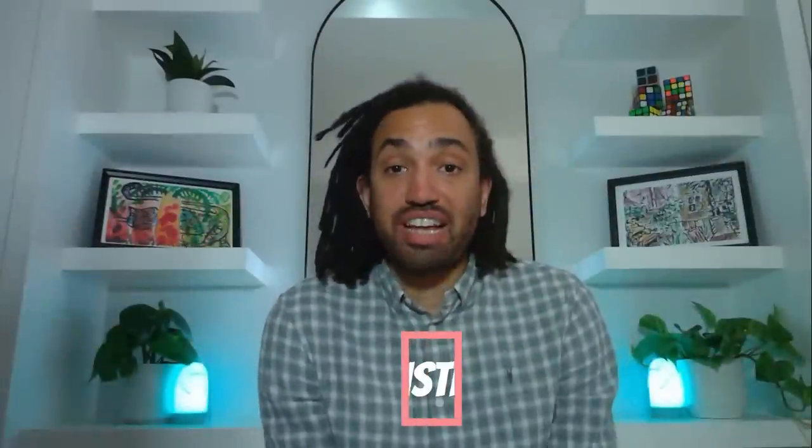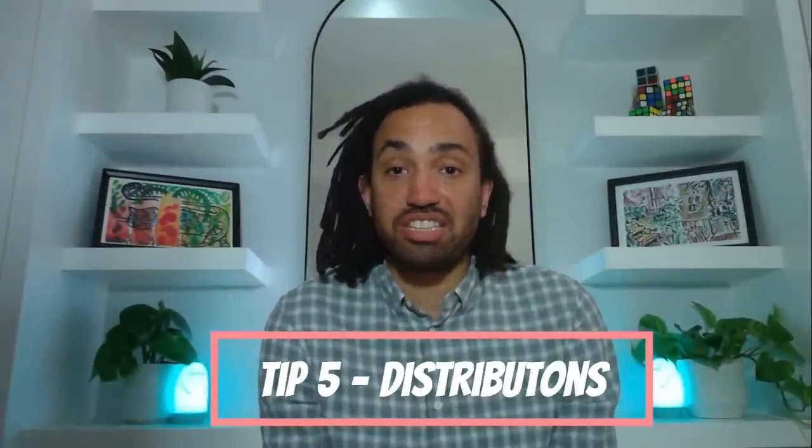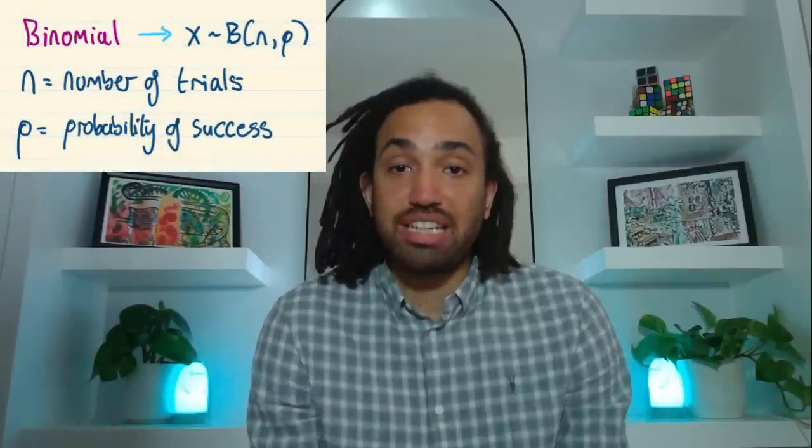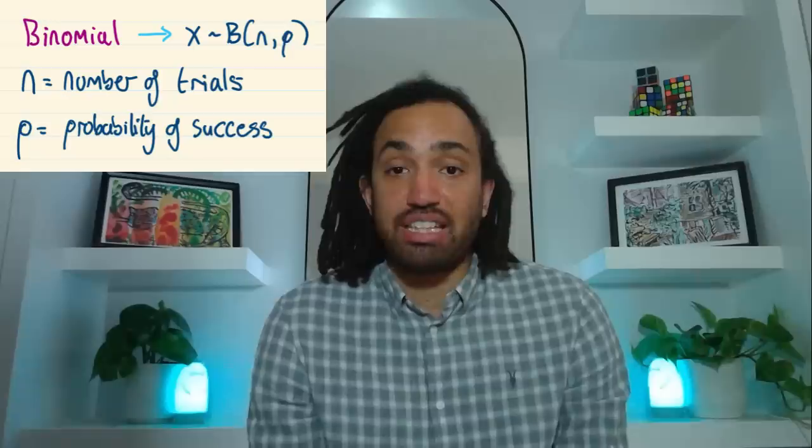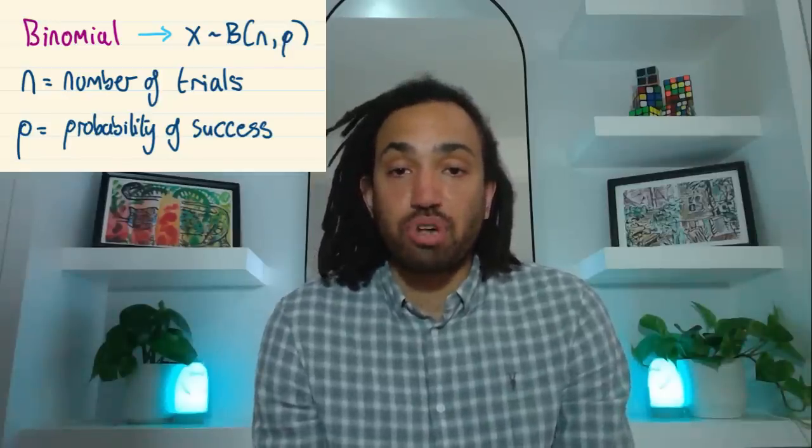Tip number five and that is know your distributions and understand the notation. There's lots to remember for statistics. I've got a video where I've made a revision sheet which has everything which you need to know. You can watch that here but for now I'm going to go over the five distributions that you need to know. Distribution number one that's binomial. The way it's notated is B open bracket N, P. N stands for the number of trials. P stands for the probability of success.